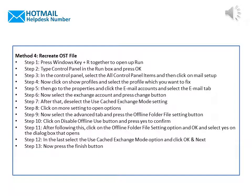Step 10: Click on Disable Offline Use button and press Yes to confirm. Step 11: After following this, click on the Offline Folder File Settings option and OK, and select Yes on the dialog box that opened. Step 12: In the last step, select the Use Cached Exchange Mode option and click OK and Next. Step 13: Now press the Finish button.